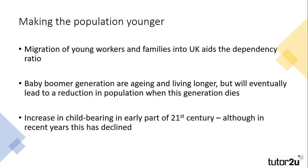Another possible impact on the ageing population would be the slight rise in fertility and births that occurred in the early part of this century, although this has declined in recent years. In order to solve the issue of an ageing population, society needs more young people, which will bring the average age down.